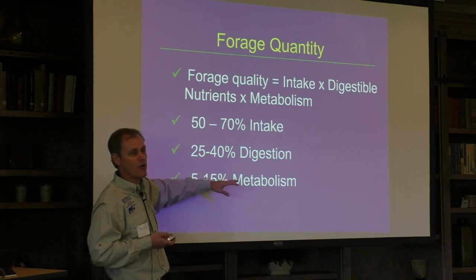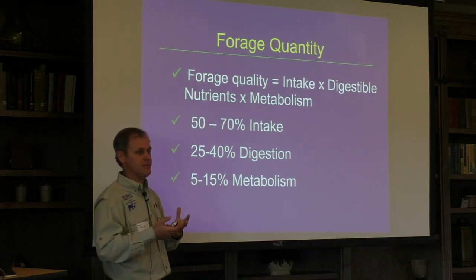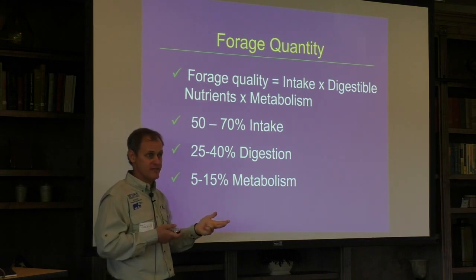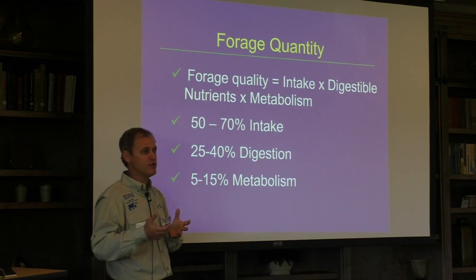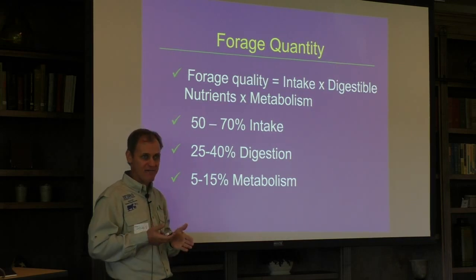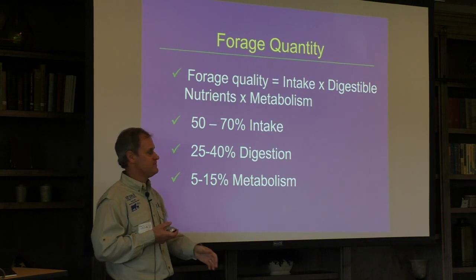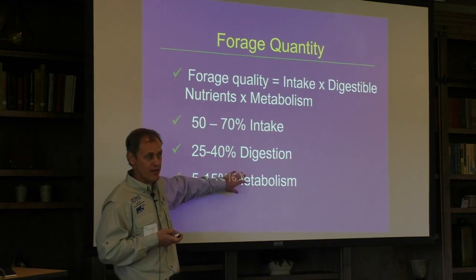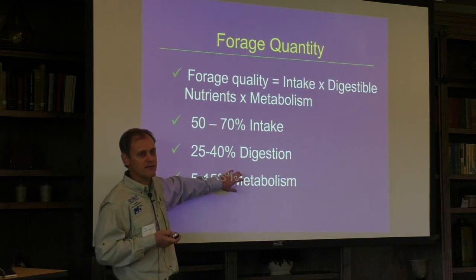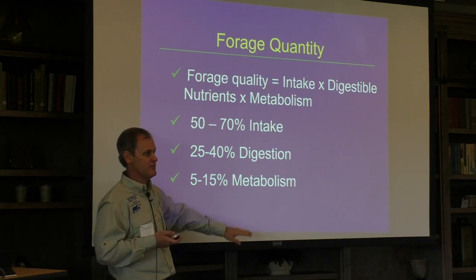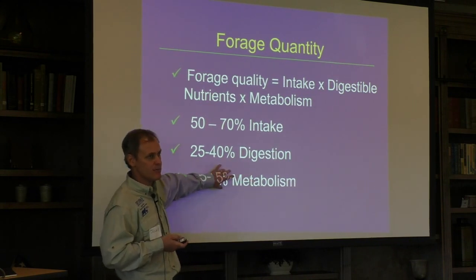Metabolism is more important than people think. With growing animals in summer — wet conditions, mosquitoes, standing water — NRC or Cornell models might predict two pounds of gain per day on a given diet. But when you put those animals on pasture during the summer under that stress, they often gain half that. We've seen this repeatedly. Mature animals have lower requirements so it's less noticeable, but for growing animals, this metabolic stress section is really important.